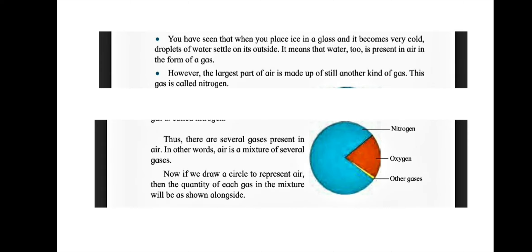Thus, there are several gases present in air. In other words, air is a mixture of several gases. Now, if we draw a circle to represent air, then the quantity of each gas in the mixture will be as shown alongside.